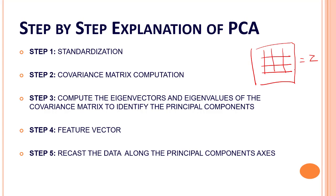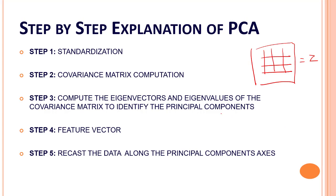Then comes step two: the covariance matrix computation. What we are going to do is calculate the covariance of Z. We will take matrix Z, transpose it, and multiply it by Z. The output will be the covariance matrix of Z.